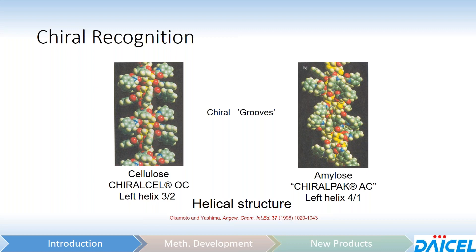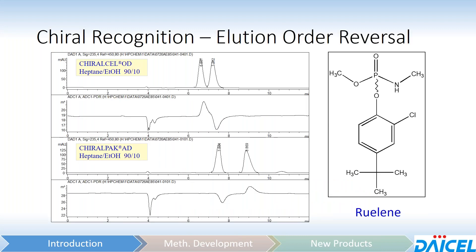The amylose version also puts the chiral selectors in very different orientations versus the cellulose version. To see a real-world demonstration of this, you can see pretty dramatic results. Ruline here is shown on ChiraCell OD and ChiroPak AD — it's the same selector, 3,5-dimethylphenylcarbamate, except ChiroPak AD is on amylose and ChiraCell OD is on cellulose. At first glance, both appear to be separating Ruline relatively well.